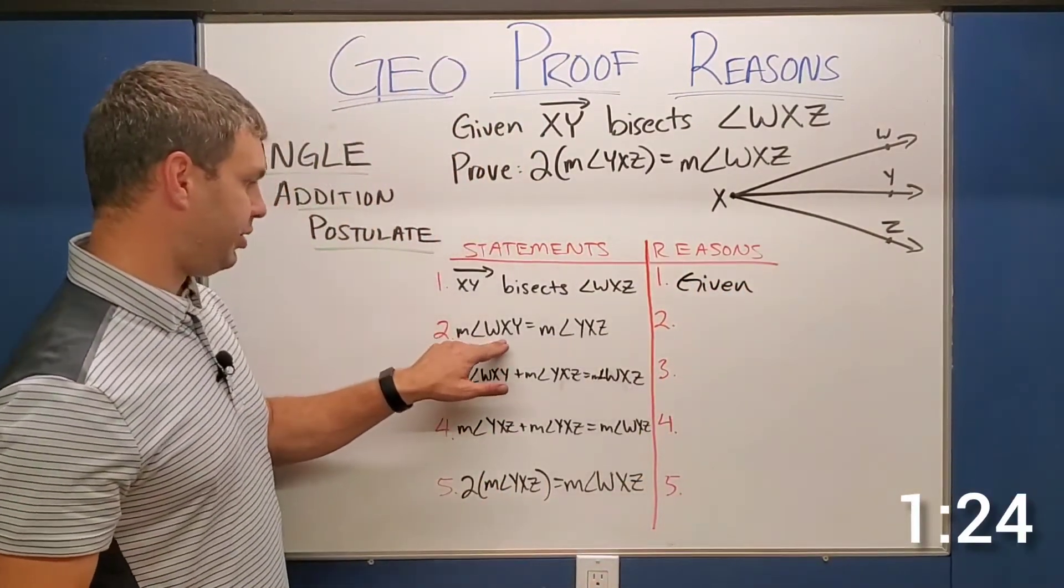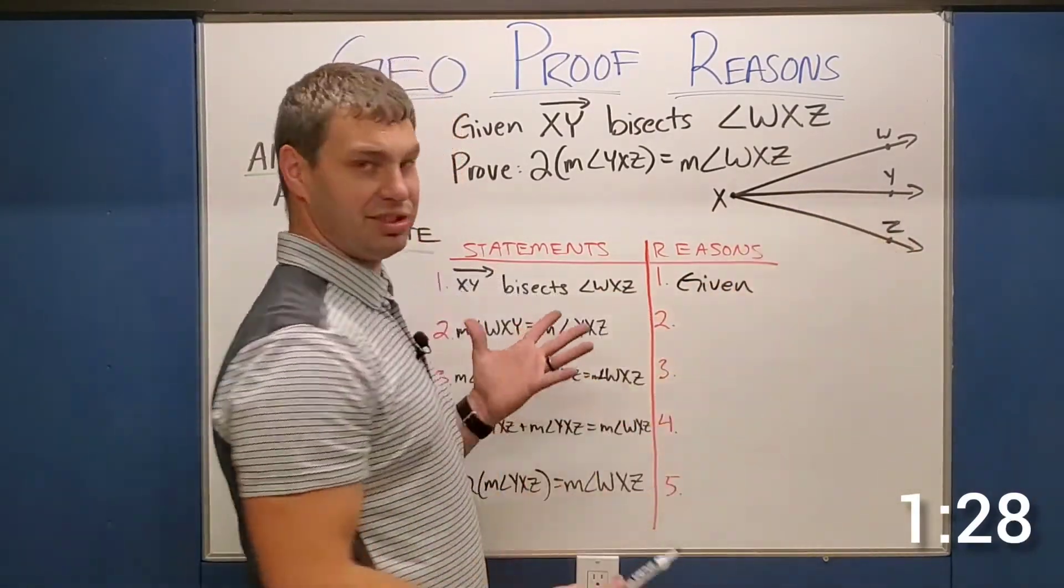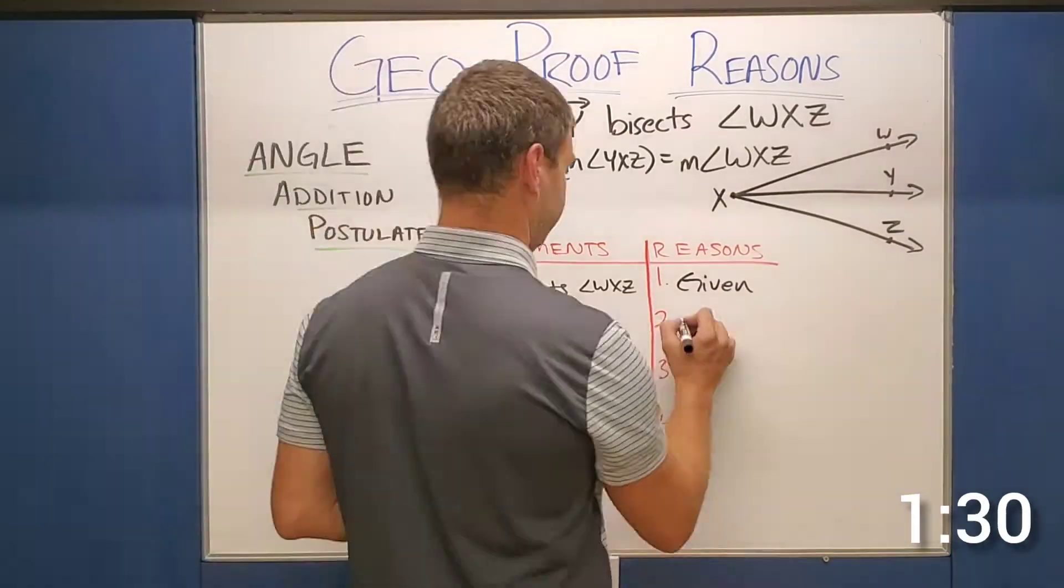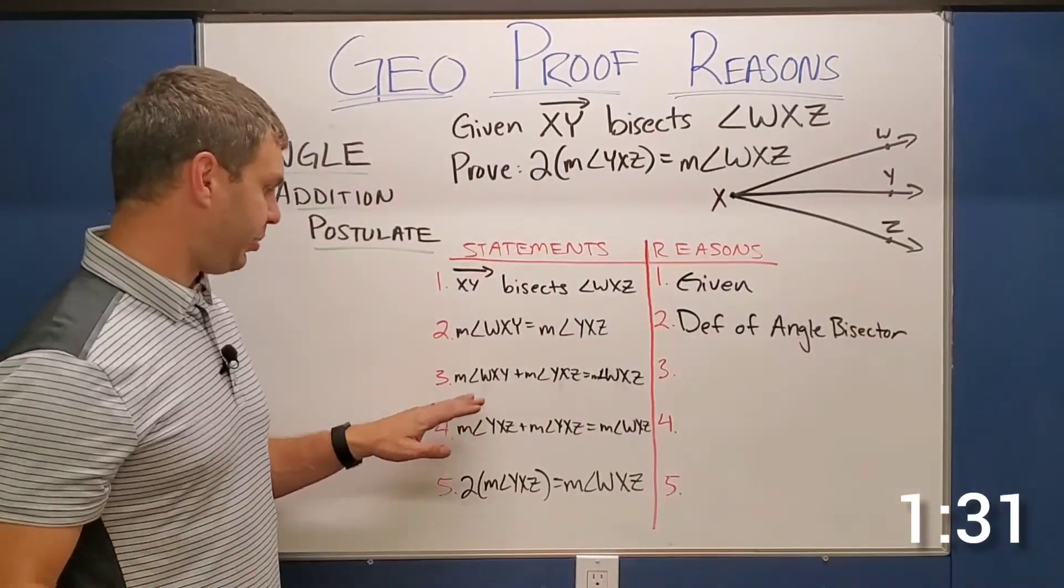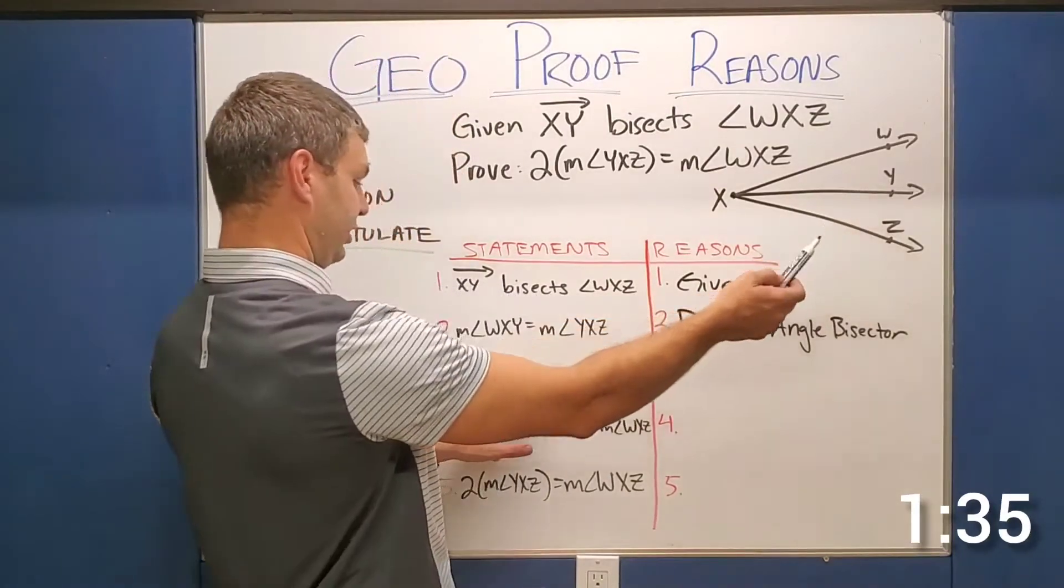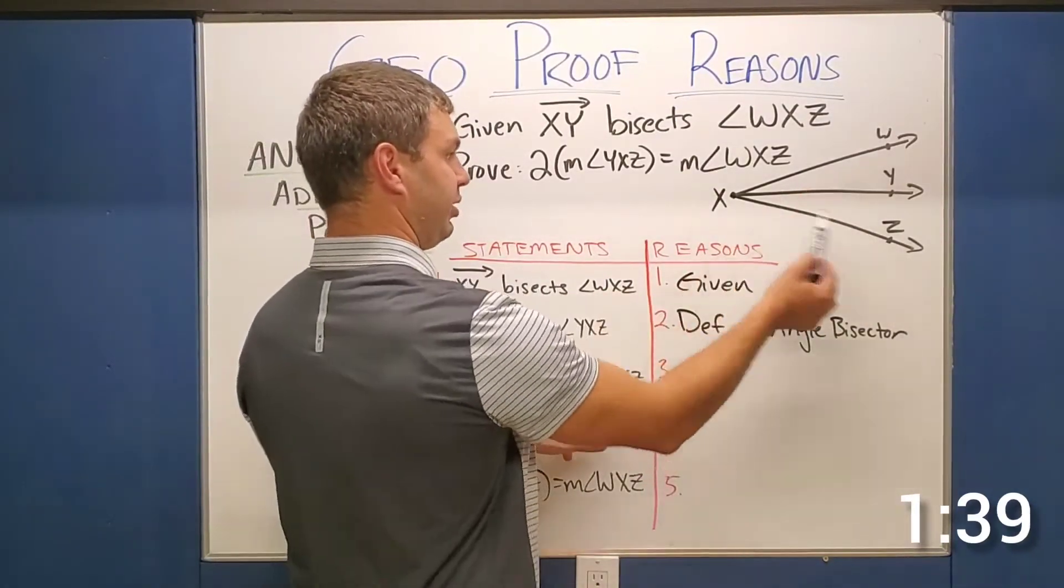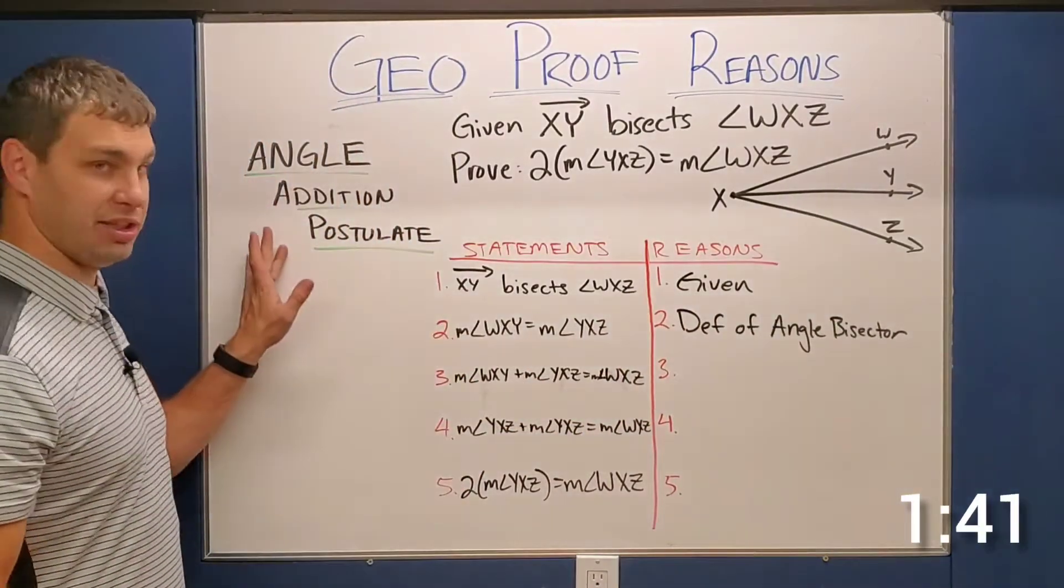Secondly, the measure of WXY, WXY equals the measure of YXZ. That's just the definition of an angle bisector. Then step three says the measure of angle WXY, top one plus the measure of YXZ, the bottom one equals the measure of the whole thing, WXZ. That is our angle addition postulate.